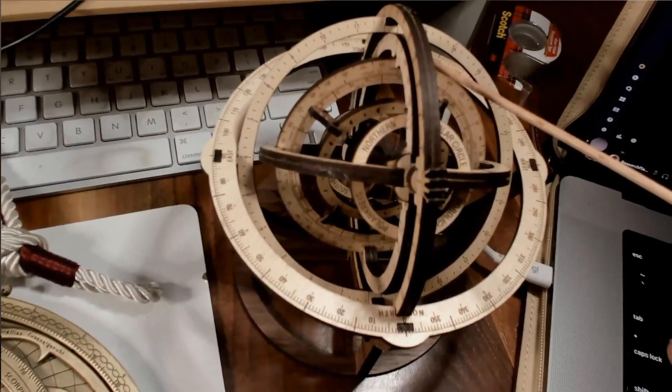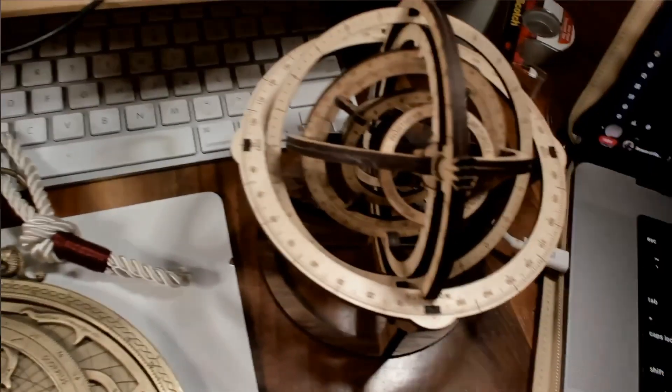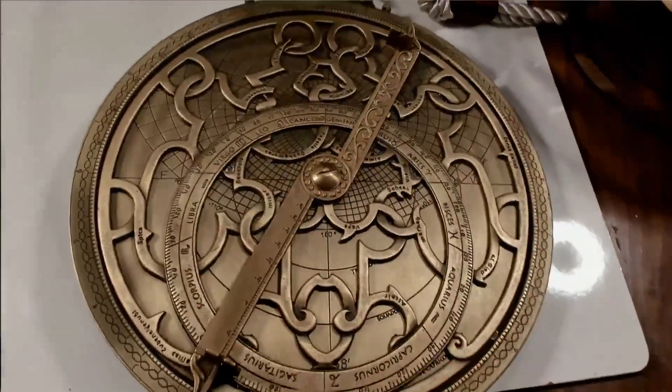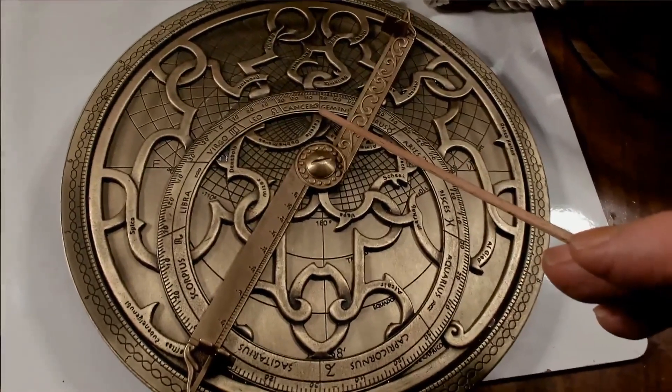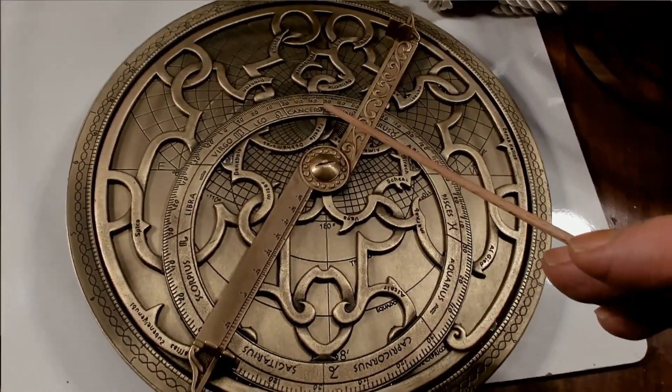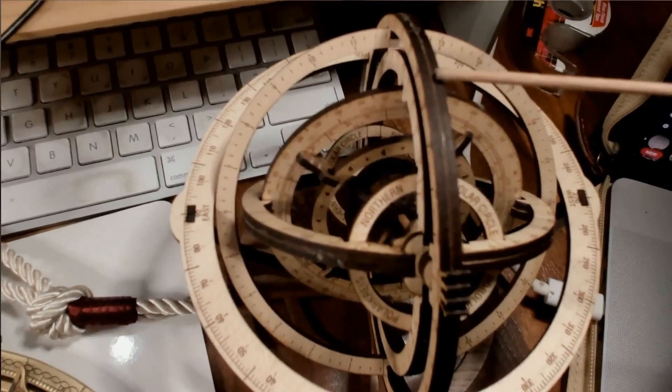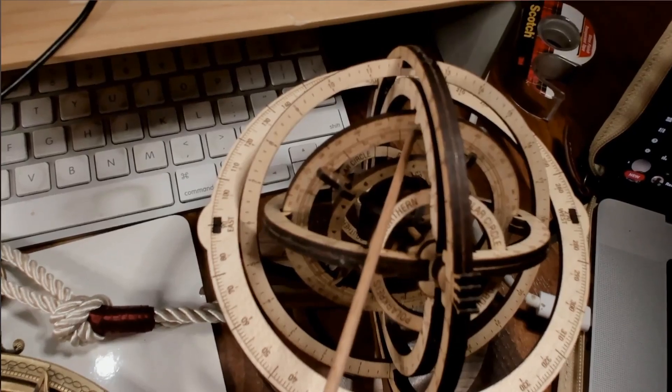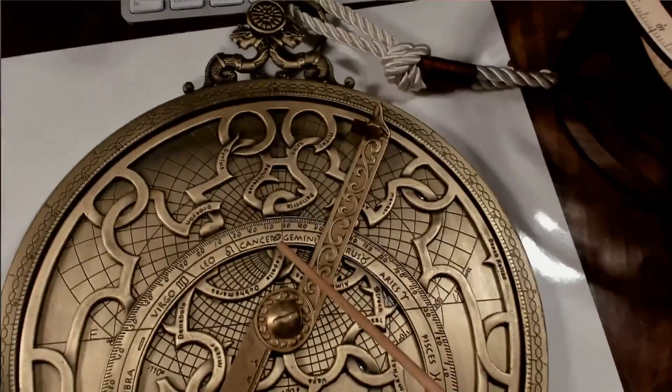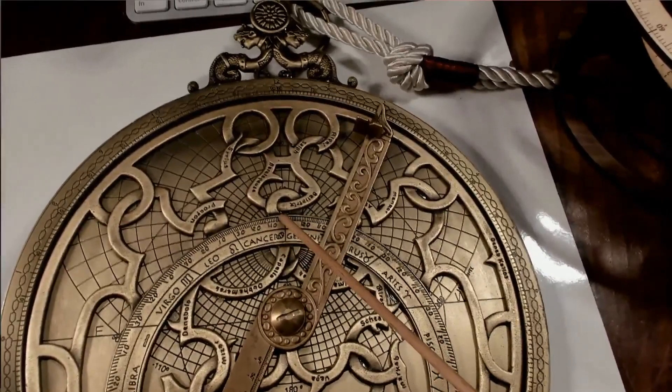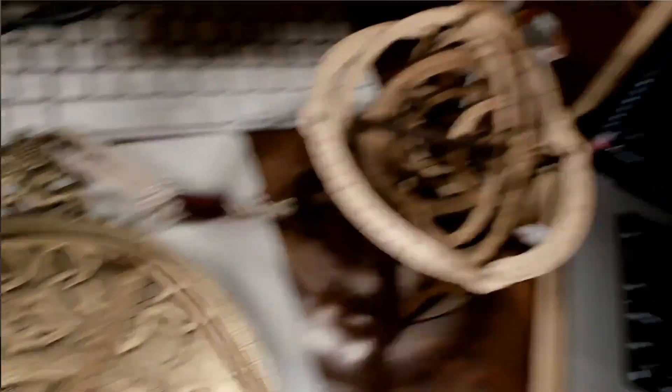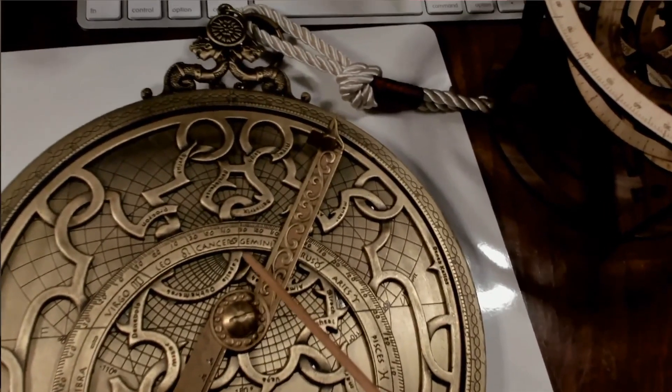Currently, the armillary sphere is set up for 12 noon on the summer solstice. To do that with the astrolabe, we would set the ecliptic ring to the first degree of cancer. That's the summer solstice. And you'll see that the ecliptic is almost at the zenith. So here's the zenith. Here is the position of the sun on June 21st. Here is the zenith on the astrolabe, and here is the position of the sun on June 21st. It's very near the zenith, which is listed on the climate of the astrolabe underneath.